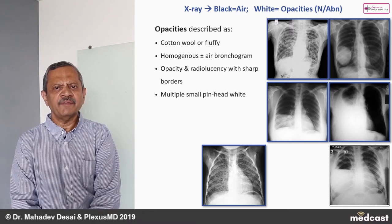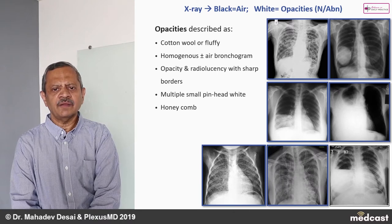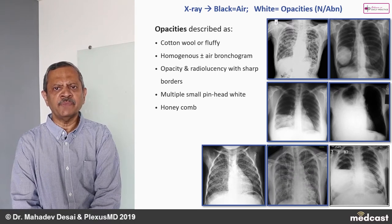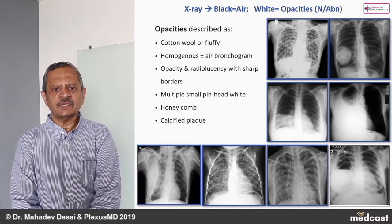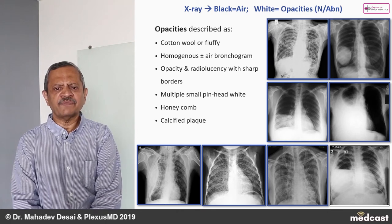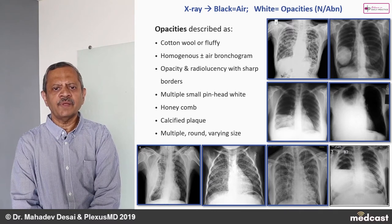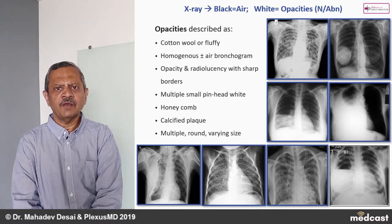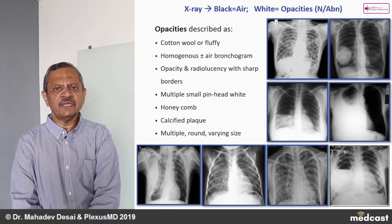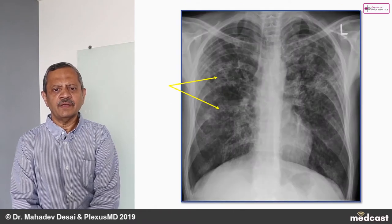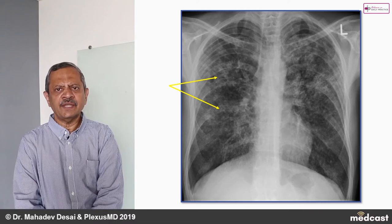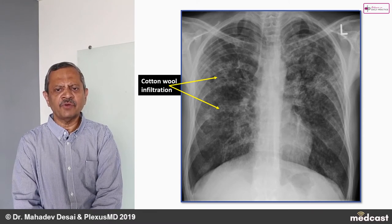Opacities may be seen that are very small and tiny, just like heads of a pin. Sometimes opacities are described as small thin-walled honeycomb-like or bunch-of-grapes-like. Opacities can also be hard, calcified, and dark without air bronchogram. Sometimes you find opacities of different varieties and different sizes in both lungs — rounded opacities in both lungs are generally suggestive of metastasis.